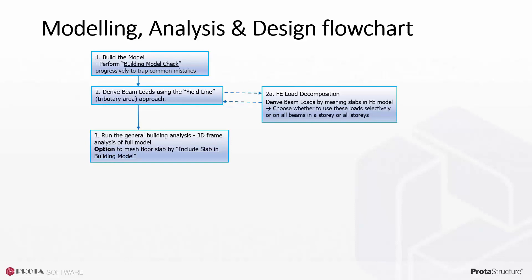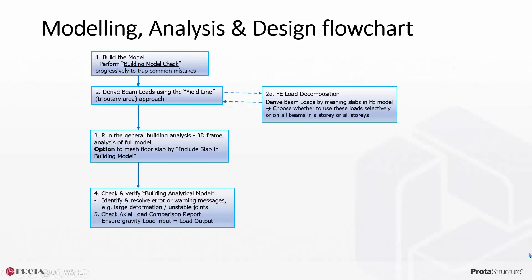By default, floor slabs are not meshed in building analysis, but there is an option to mesh slabs of all or selected stories. After building analysis is successfully completed, ensure to check and verify the analytical model. You must identify any error or warning messages, such as large deformation or unstable joints. Check also that the deflection and member forces are reasonable. Check the axial load comparison report to ensure no gravity load is lost — load input equals load output.